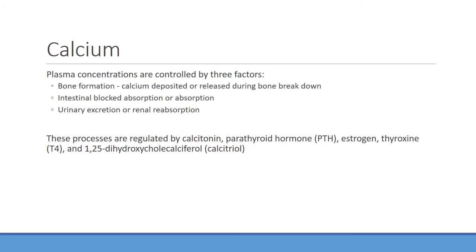The last topic is regulation of calcium. Plasma calcium concentration is controlled by three things: bone formation — calcium is deposited into bone, which is our major calcium repository; intestinal absorption; and urinary excretion or reabsorption. Several hormones affect this, including calcitonin, parathyroid hormone, estrogen, thyroxin, and 1,25-dihydroxycholecalciferol (calcitriol).